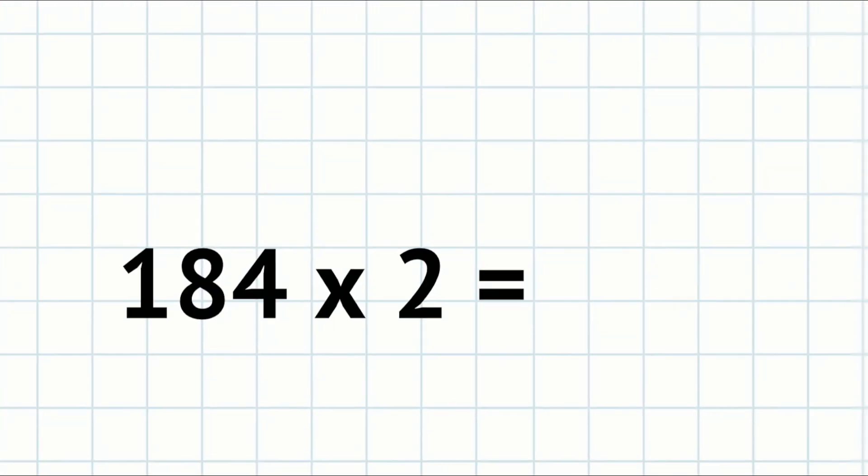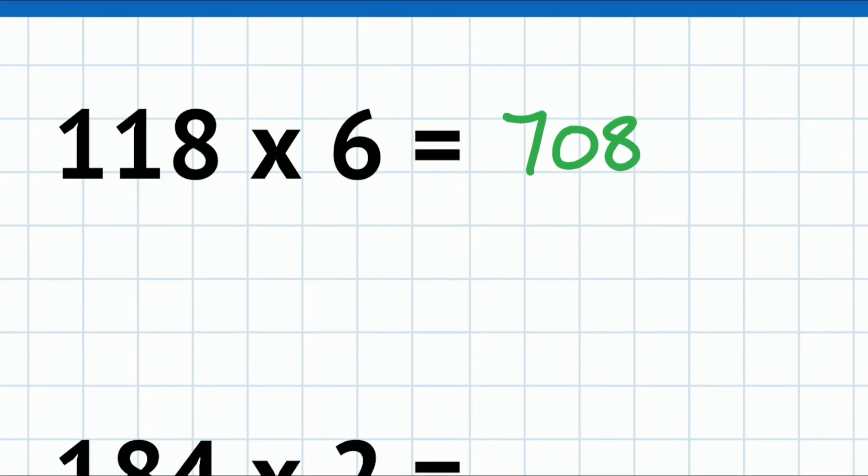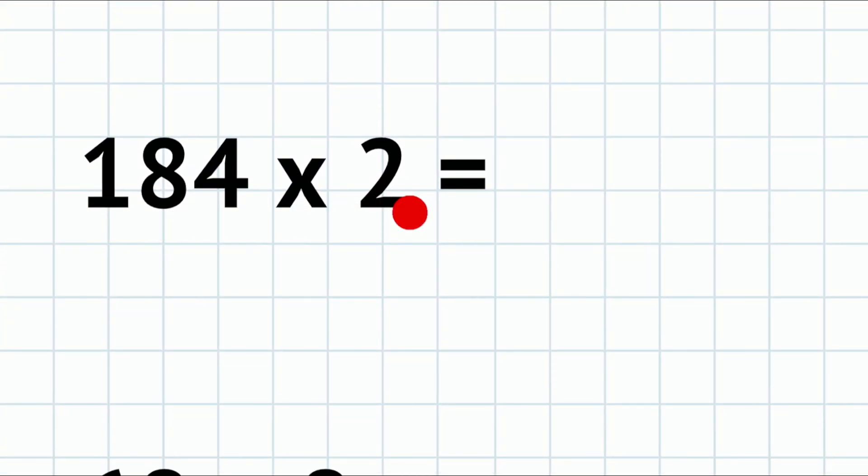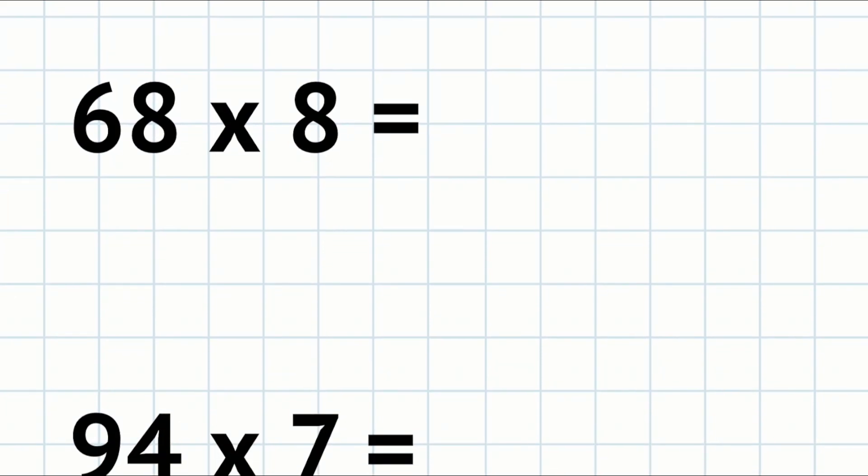Let's go to the last four. 118 times 6—well, that's 660 plus 48, which is 708. Notice you can split across three digits if you want to. 100 times 6 is 600, 10 times 6 is 60, so 660 plus 48 is 708. 184 times 2—you can say 180 and 4. What's 18 times 2? 36, so that's 360. 4 times 2 is 8, so 368. 68 times 8—60 times 8 is 480 plus 64, so that's 544.